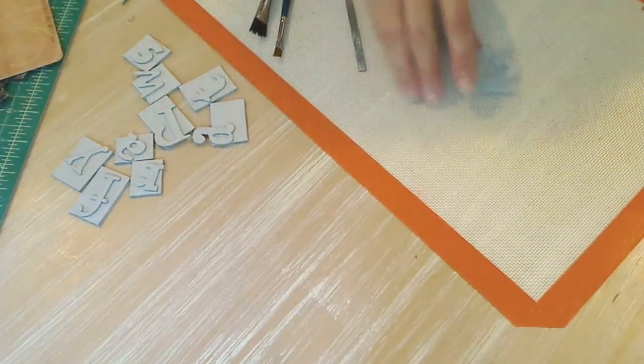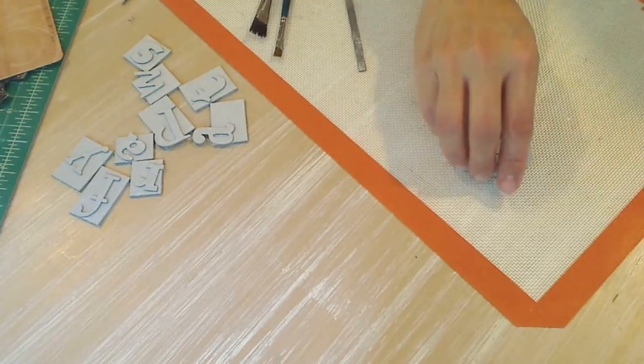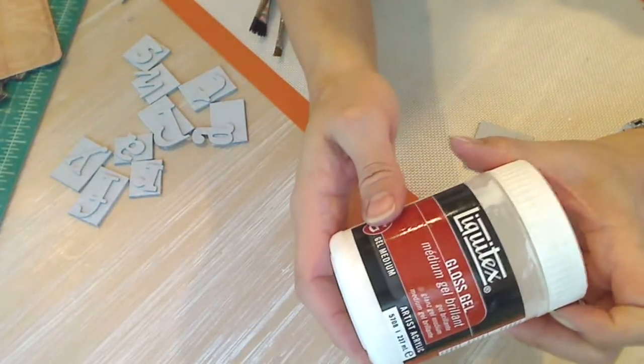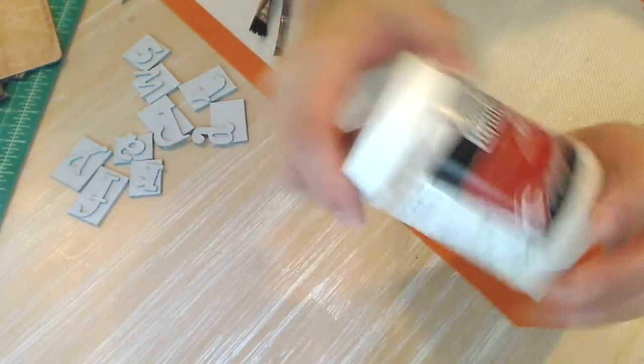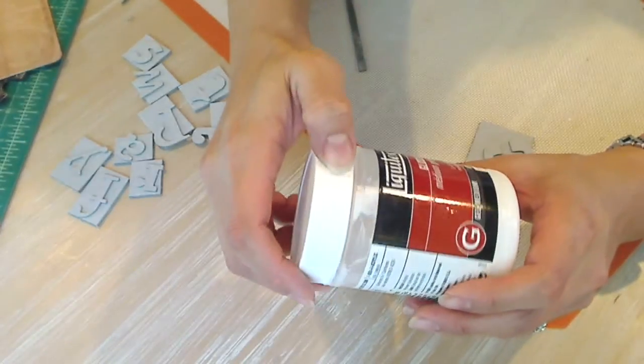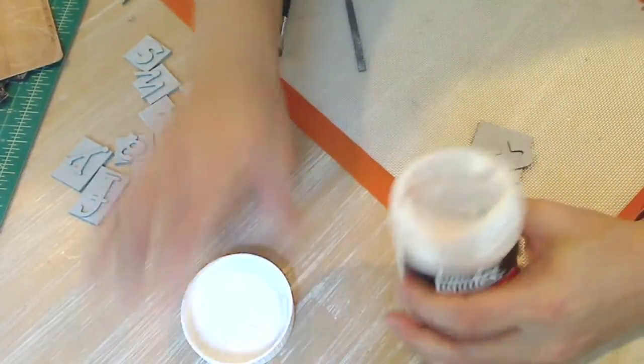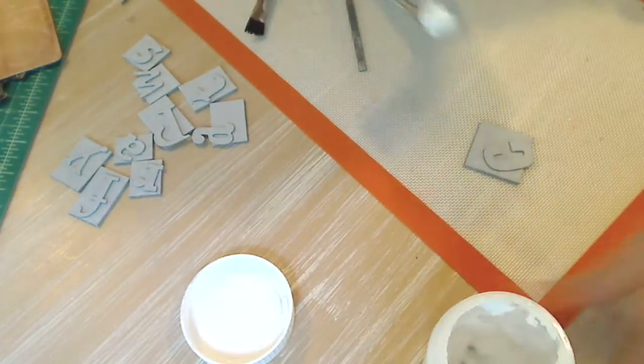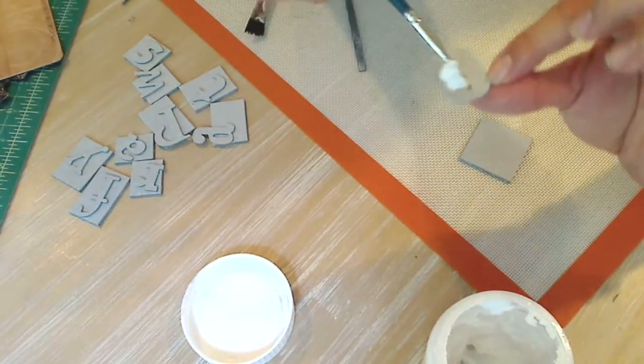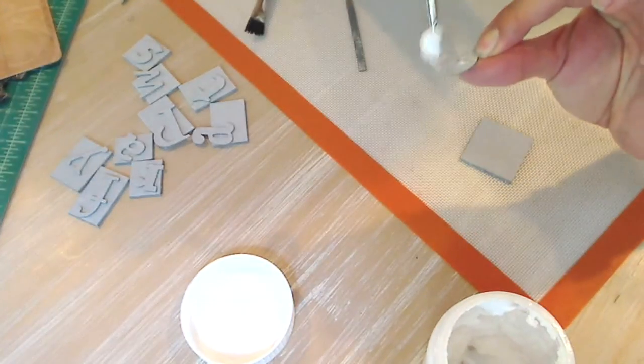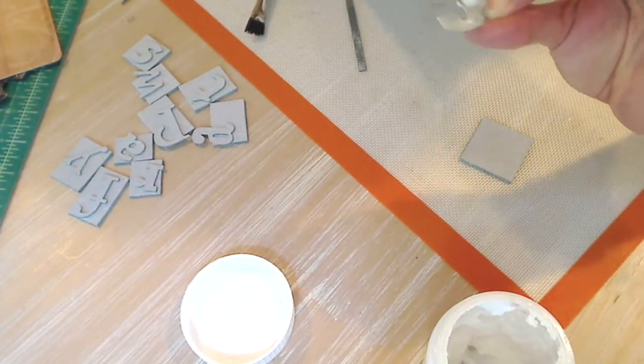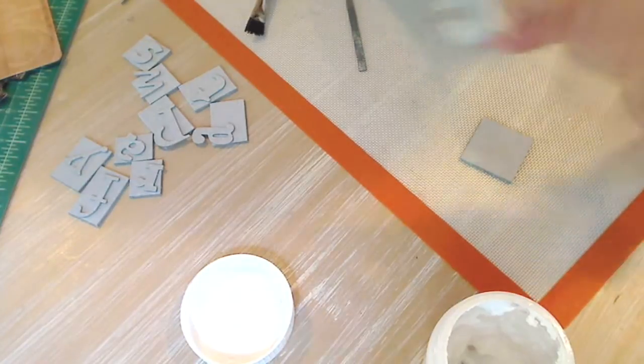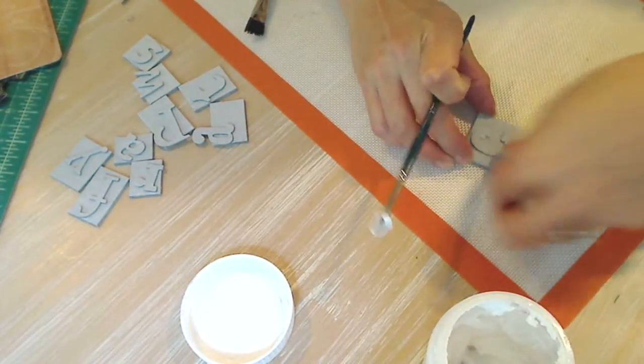And then you start assembling. And I would recommend using a gel medium. This is my favorite, Liquitex. It's a medium gel. It's a gloss gel. And I just take my paint brush, an old one, not one that you would use for fine painting, and just go about putting it on and adhering it onto the block.